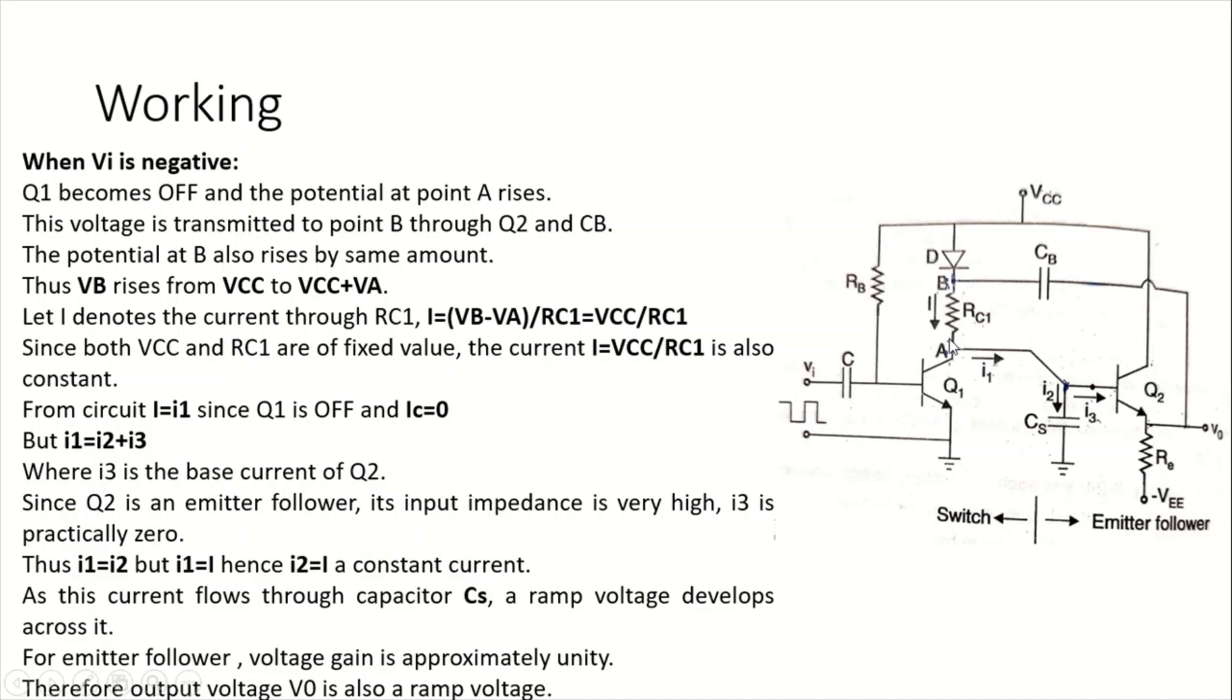We'll find IC current of Q1 transistor has zero as this is in OFF condition. The current I can be found by taking VB minus VA divided by RC1, where VB minus VA equals VCC. Substituting that, we find it becomes VCC by RC1.